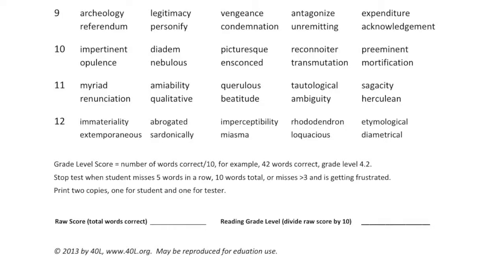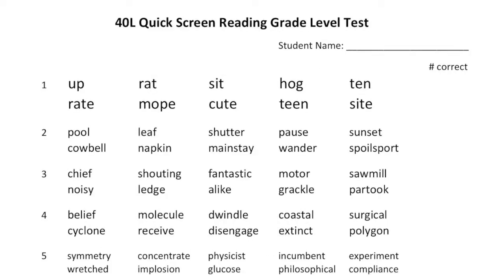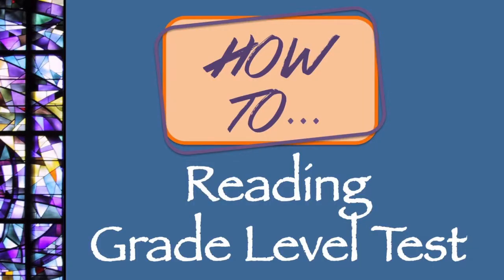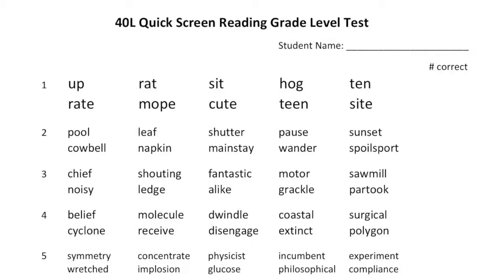Do not tell the student the correct word. This makes it so that you can reuse the test after the syllables program finishes without test bias. See 40L's YouTube video, How To Grade Level Test, for a more detailed explanation. There are also printed instructions with the test. The testing files are all available at the Syllable Spell Success page, which is linked in the video description.